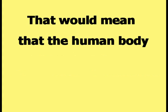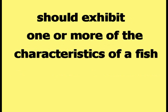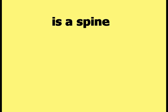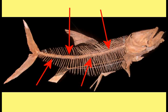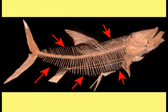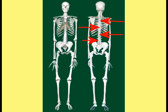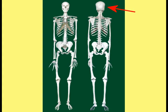That would mean that the human body should exhibit one or more of the characteristics of a fish. One characteristic that a fish and a human being share is a spine. A fish has a spine, as demonstrated in this picture, with ribs sticking out from either side and a head at one end. A human being also has a spine, as highlighted in this picture, with ribs sticking out to the side and a head at one end.